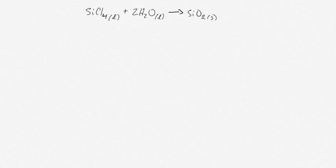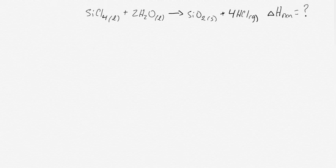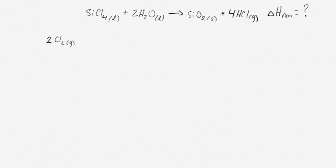Our first example is going to involve the reaction of SiCl4 with H2O to produce SiO2 and HCl, and we're going to be looking for the overall delta H for that reaction. In order to do this Hess's law calculation, we'll need a couple of equations that we can rearrange and add together. We'll look at delta H formation equations for all of the individual components of that overall equation.